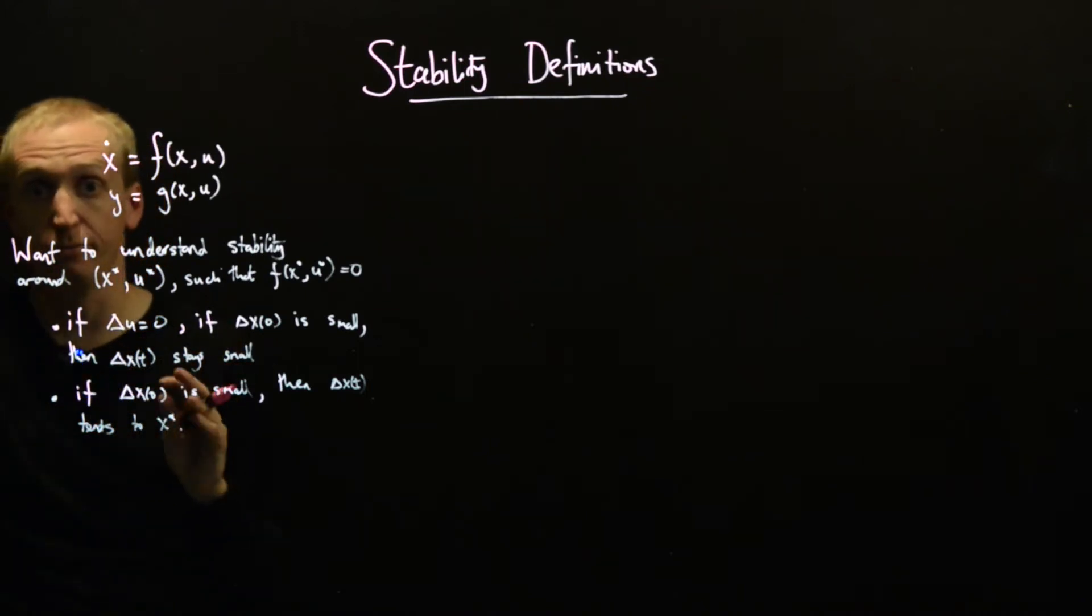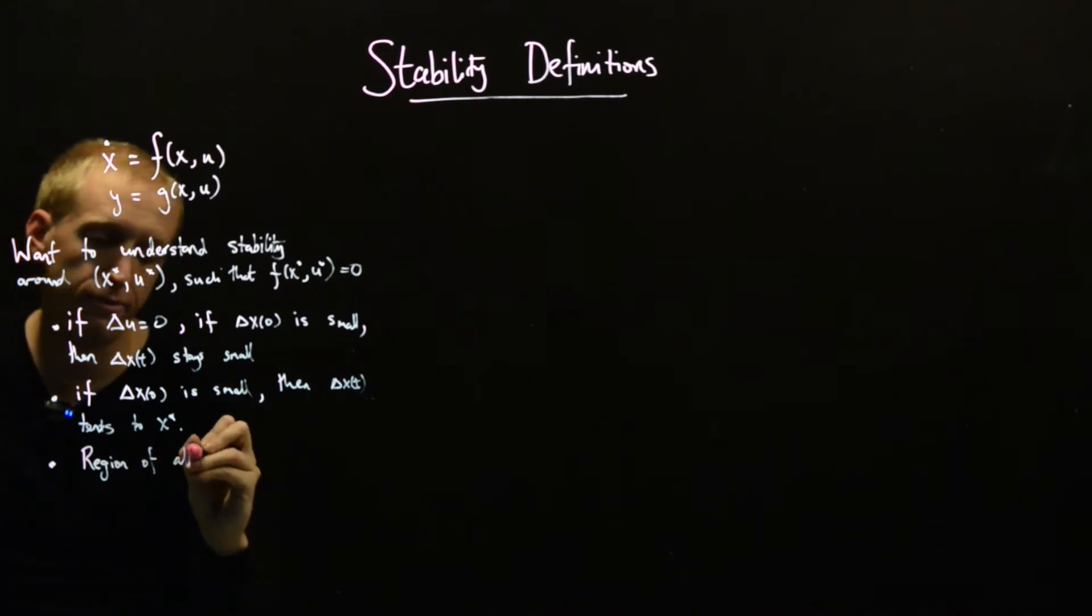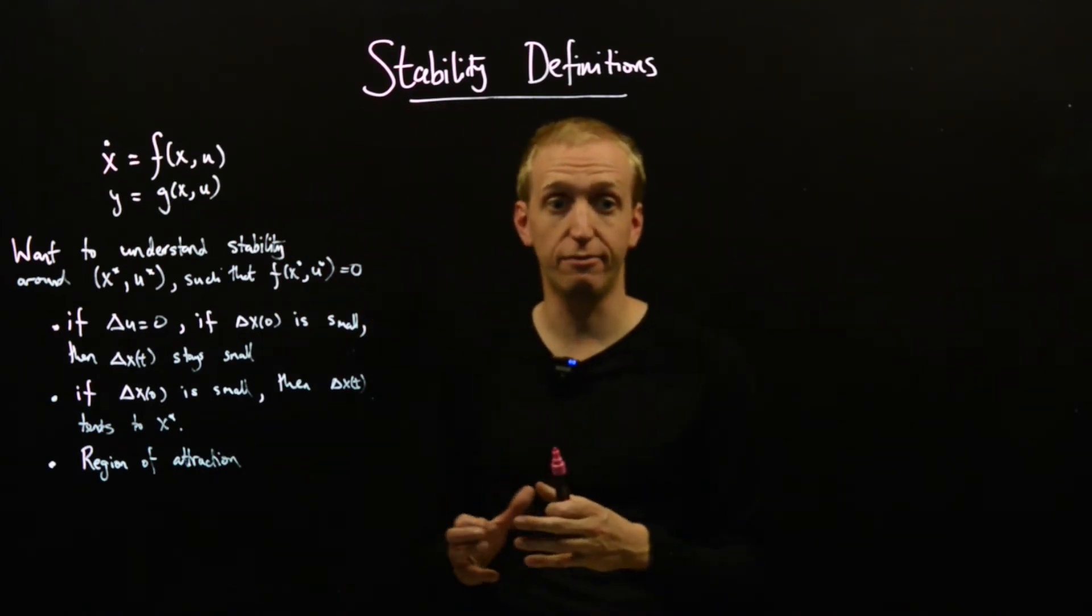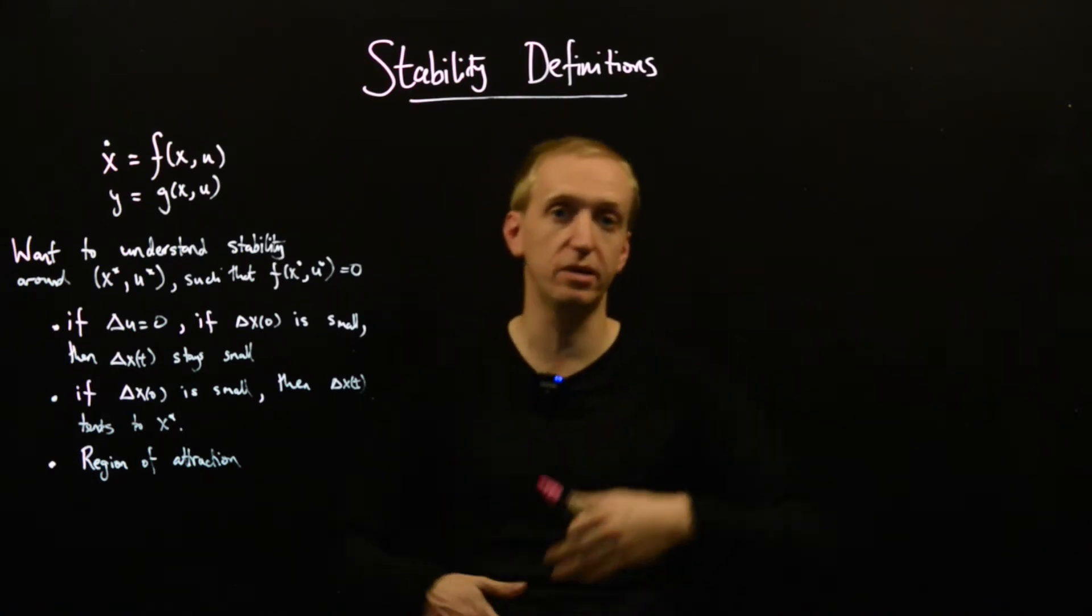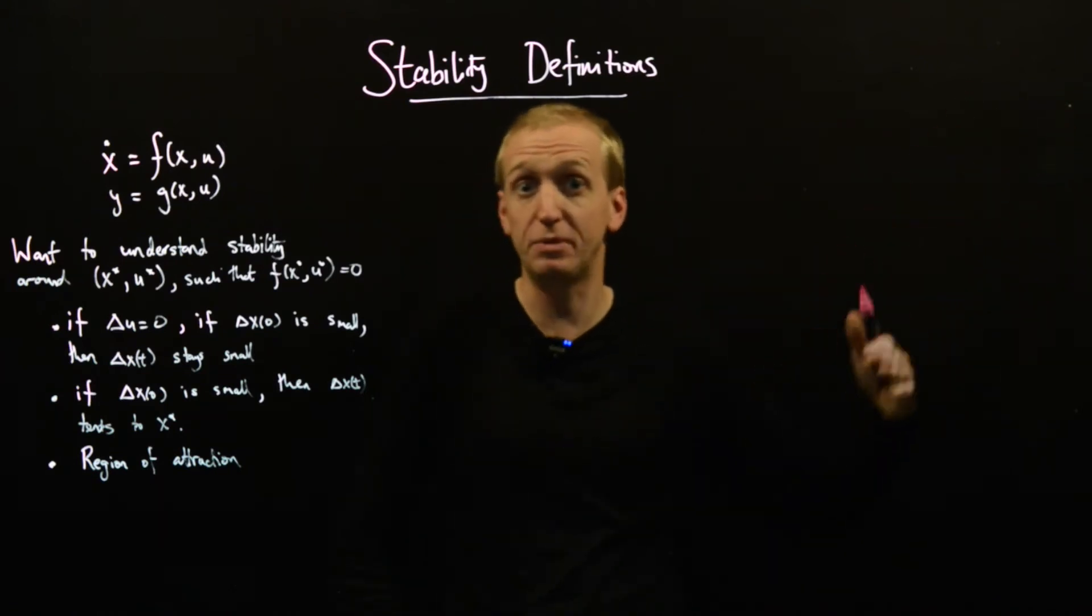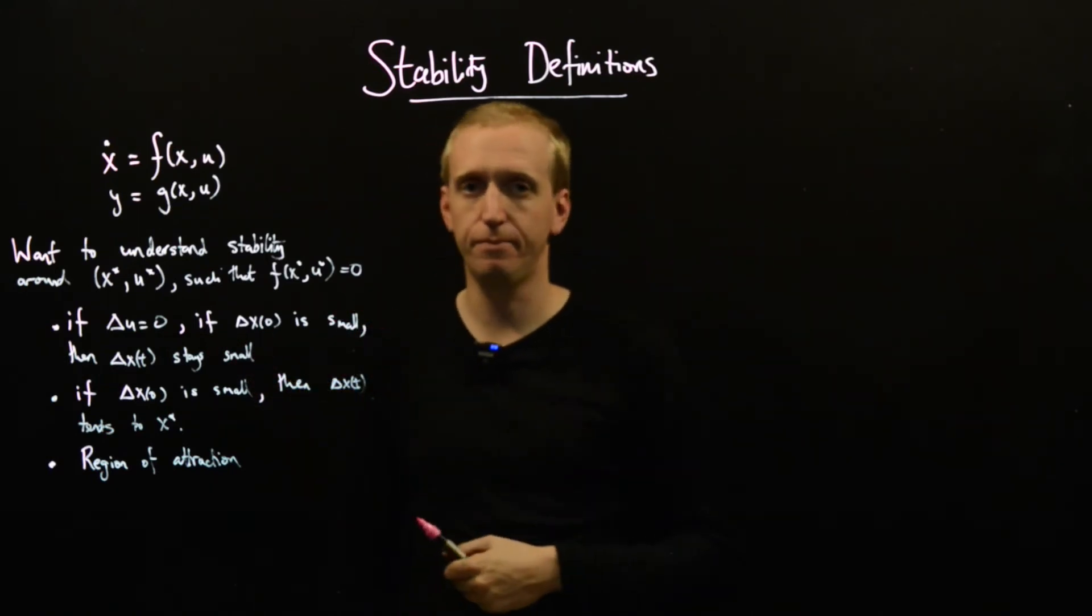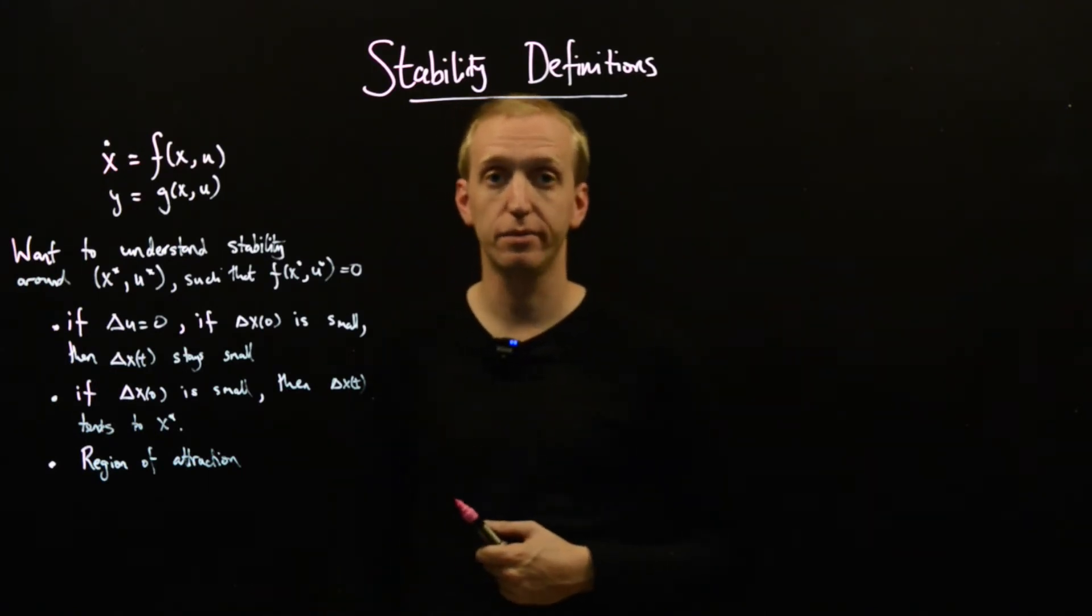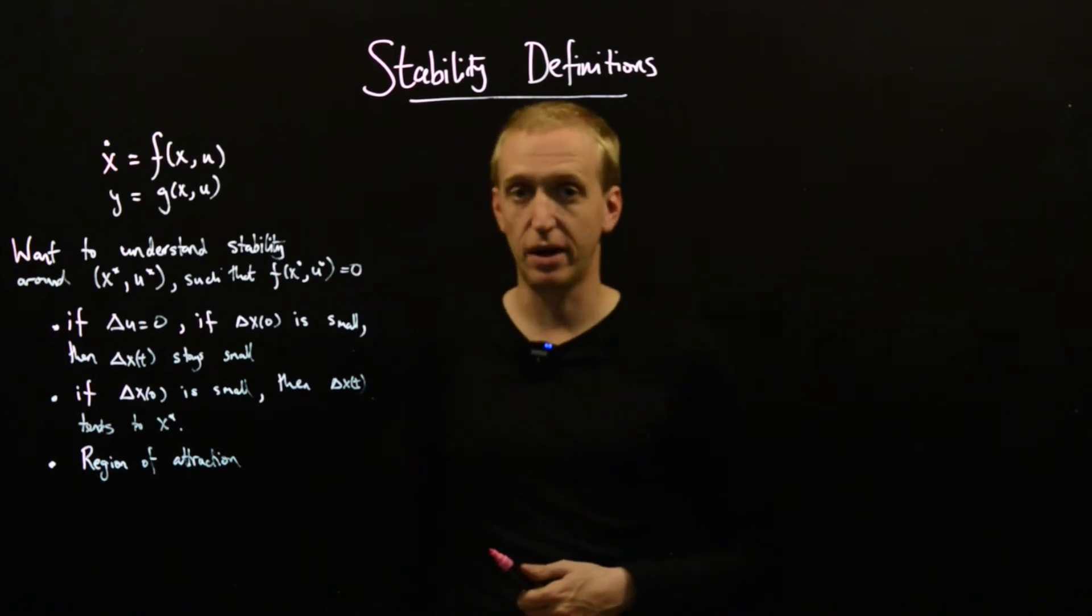And then finally, and really very usefully, we would like to maybe have some notion of region of attraction. We've already seen in some of our examples, equilibrium points might just have some area of the state space, where if you start there, you'll tend to that equilibrium point, and if you go too far away, you'll wander off somewhere else, perhaps even to another equilibrium point. And so having some idea of what the small here means, for example, in a quantitative way, could provide good insights about our nonlinear system. And this is something we're going to get back to in future lectures, but we'll just sort of lay some of the foundations for that here.